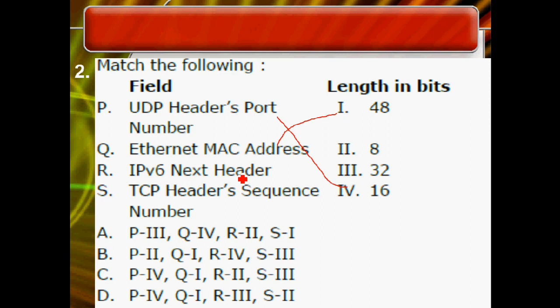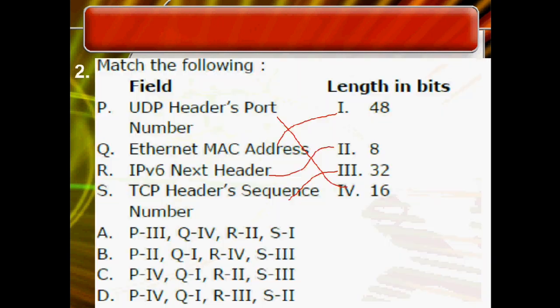For IPv6, one of the fields in the header format is the next header field, which is 8 bits. For TCP, the header contains both the sequence number and acknowledgement number fields, each of which is 32 bits. The corresponding matched option is C.